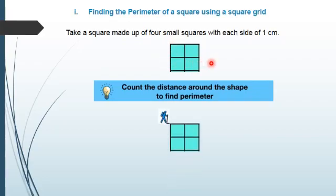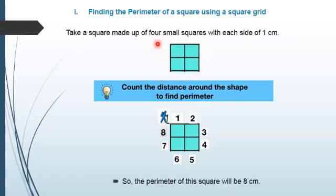If we imagine we are walking around the outside of the shape, we will walk 1, 2, 3, 4, 5, 6, 7, 8 spaces. So it took us 8 spaces to move around the outside of this square. Therefore, the parameter of this shape will be 8 cm.